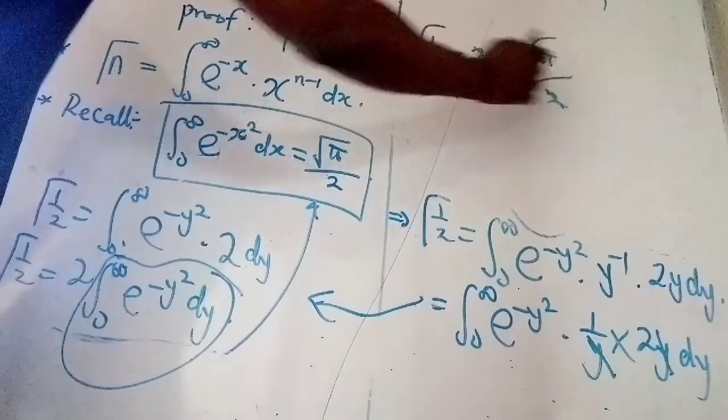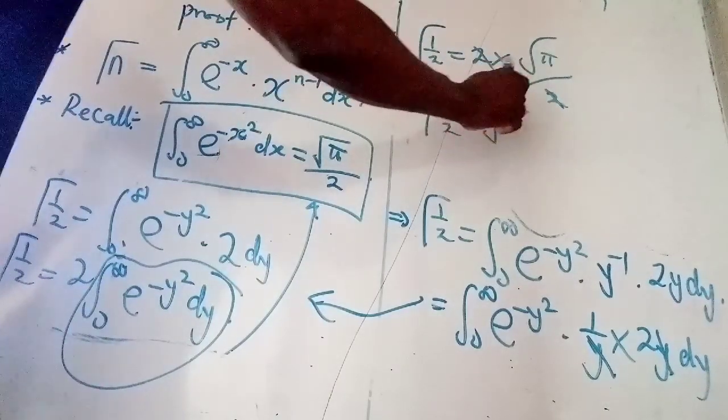So, 2 cancel 2. That means gamma of half equals to square root of pi. So, that's the end of the proof.